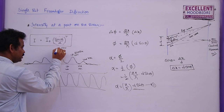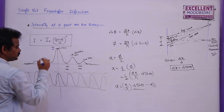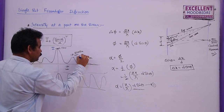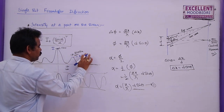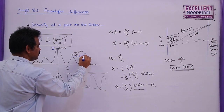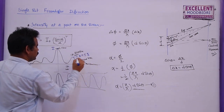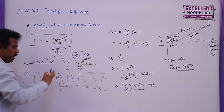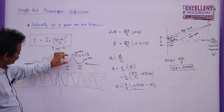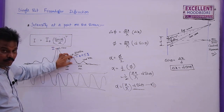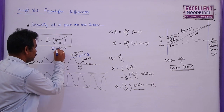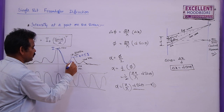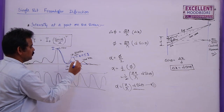In interference, the number of fringes is very high and all bright fringes have the same intensity. But in diffraction, only the central bright fringe has maximum intensity; after that intensity decreases rapidly. The intensity of the first secondary maximum is only 4.7% of the central maximum intensity. So if central maximum is represented as 100 cm in the graph, the first secondary maximum is only 4.7 cm.